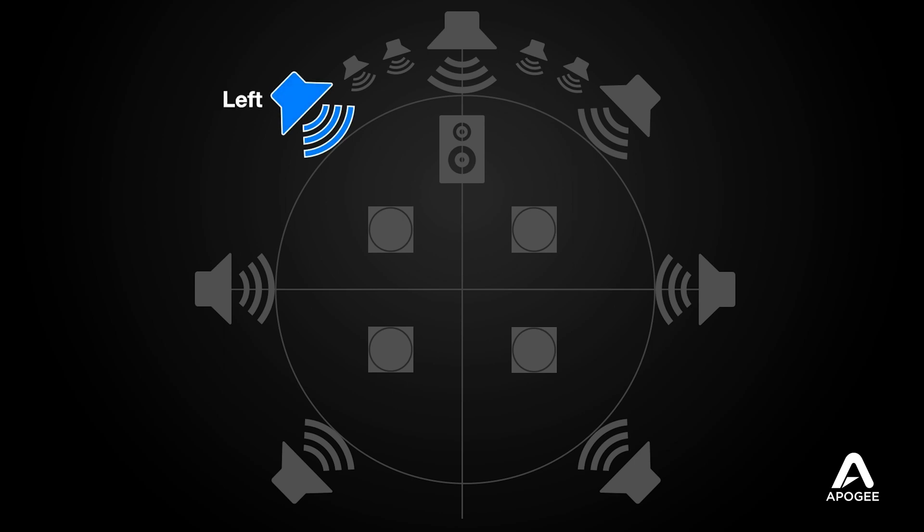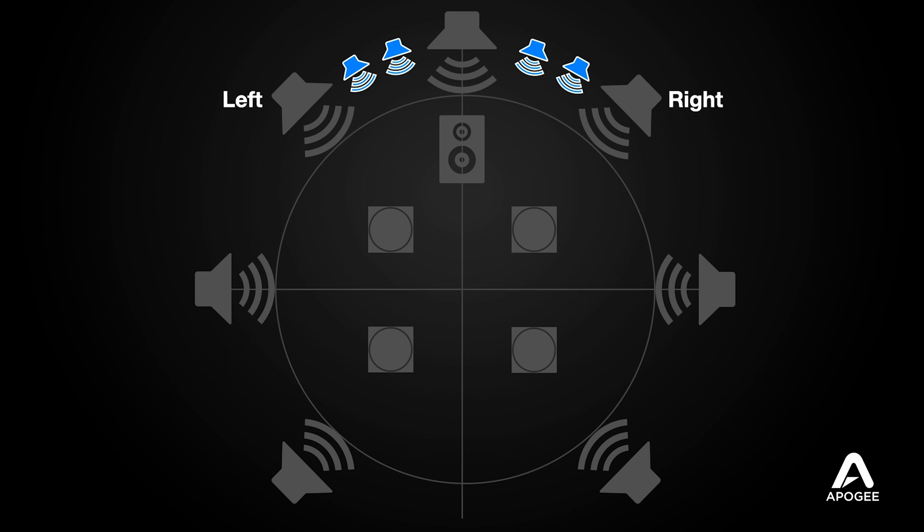In your typical studio that accommodates both Atmos and stereo monitoring, the left and right speakers of stereo set 1 and the left and right of the 7.1.4 array are usually the same set of speakers, while stereo speaker sets 2 and 3 use smaller speakers that aren't part of the 7.1.4 array. So if we count the 7.1.4 array plus two additional stereo sets, that gives us a total of 16 speakers to connect. So let's get started there.